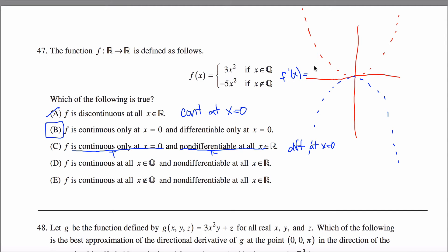f prime of x is equal to 6x or negative 10x depending on whether x is rational or irrational, but when I'm really, really, really close to 0, each of these are approaching 0, I guess is a way you could say it. So this is false, this is false.